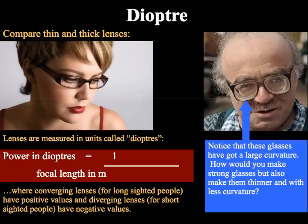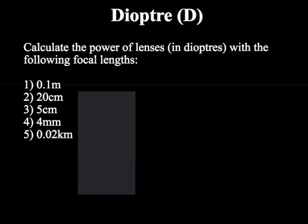However it is possible to make strong glasses but with less curvature and to make them thinner. In order to do so we need to adjust the focal length of the lens. In the exam paper they can often ask you to work out the power of a lens from its focal length.